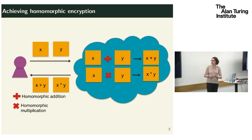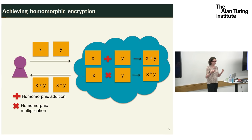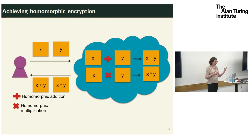To achieve this, we basically need a ring structure in the ciphertext space. We need a homomorphic addition operation taking ciphertexts encrypting x and y and outputting a ciphertext encrypting x plus y. Similarly, we need a homomorphic multiplication operation taking encryptions of x and y and outputting an encryption of x times y in the plaintext space.